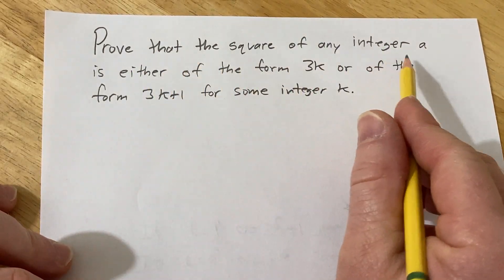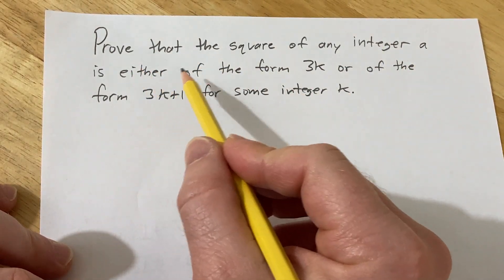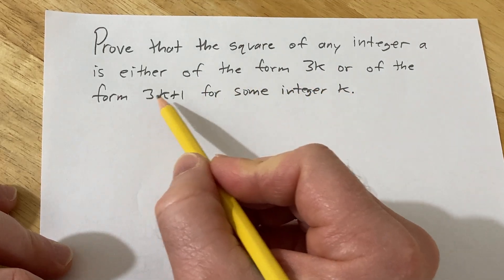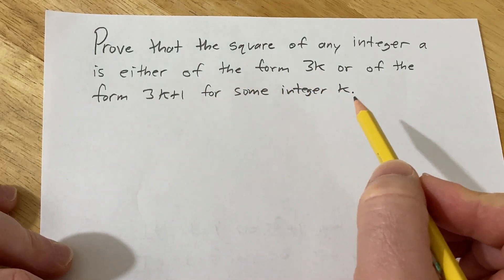Prove that the square of any integer a is either of the form 3k or of the form 3k+1 for some integer k.